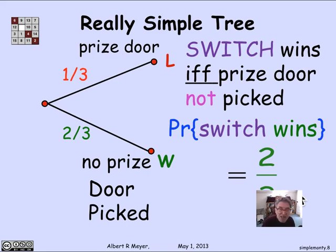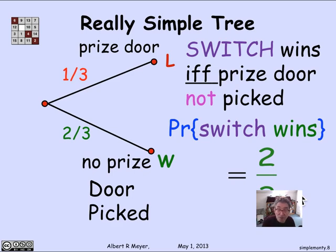So the message here is that the tree that you come up with to model the experimental outcomes is really a modeling process, and there may be many models that work to capture a given scenario. And it will often pay off to try to find a simpler tree to make the analysis simpler.